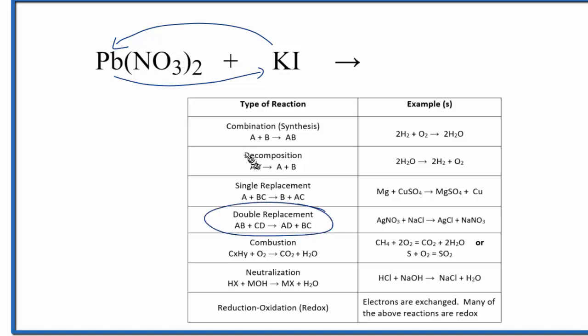Let's write the charges above each component here and see how that might work. Lead is a transition metal, so we don't know its charge. But we do know this nitrate ion, this is one to memorize, has a one minus charge. So if I have two of these one minus charges, that's two minus. This has to be two plus.